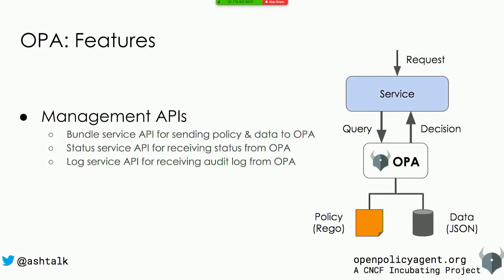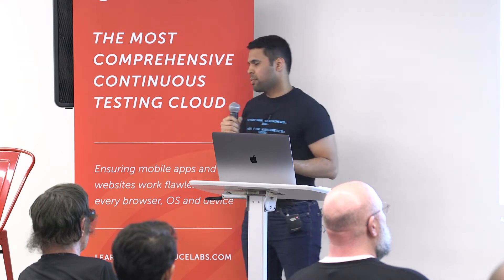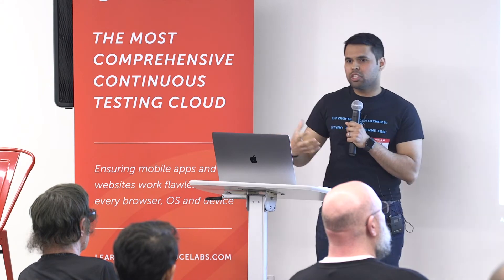OPA provides a few management APIs. The bundle API fetches policy and data from a remote service. It also has a status API which allows you to upload status about OPA itself and the bundles it may have downloaded to a remote server. And it has a decision log API which allows you to upload decision logs — such as the query that was asked, the input to that query, and the decision that was made — to your remote service. These APIs let you implement your own control plane.